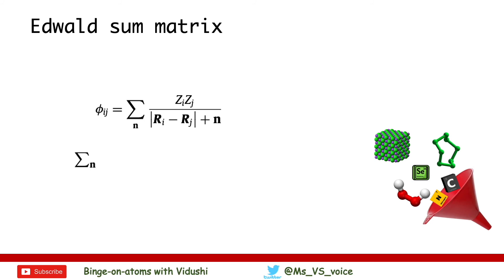Here, sigma N is the sum over all three lattice vectors N equals to HA plus KB plus LC.